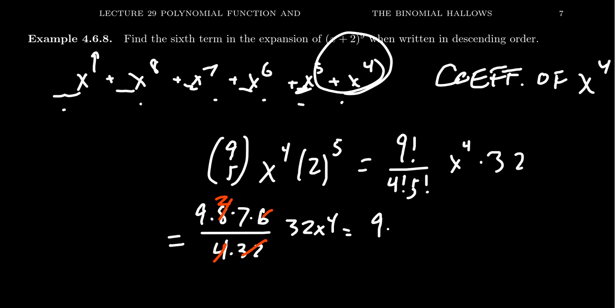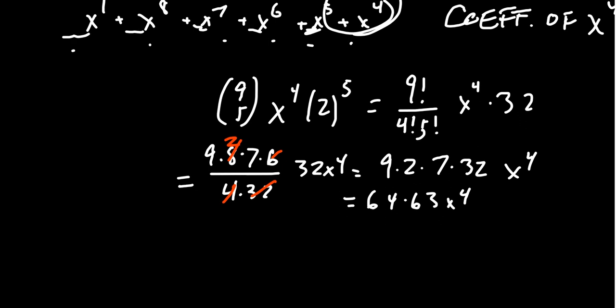We have 9 times 2 times 7 times 32 times x^4. When we multiply all those together: 2 times 32 is 64, 9 times 7 is 63, and 64 times 63 equals 4032x^4. So the coefficient of the sixth term is 4032. If we need to know just one of the coefficients, we can figure that out without having to multiply everything out. That gives us a nice application of the binomial theorem.